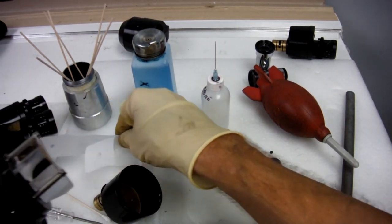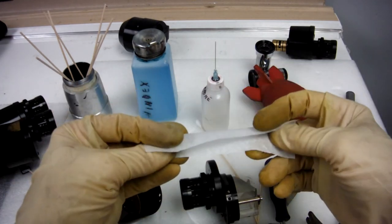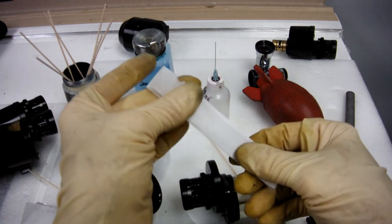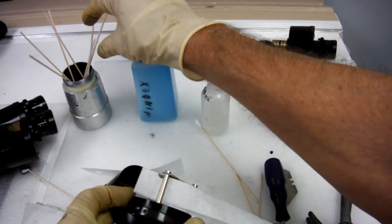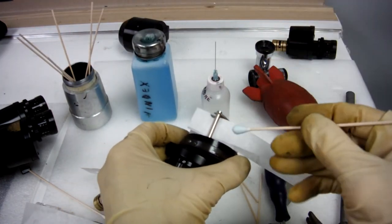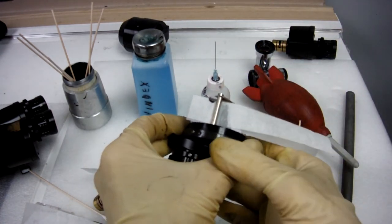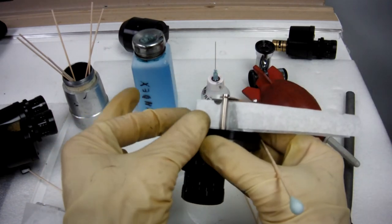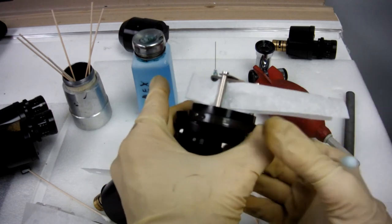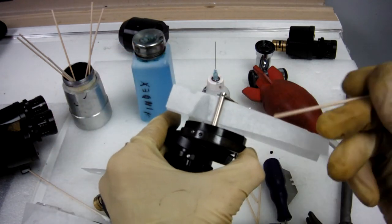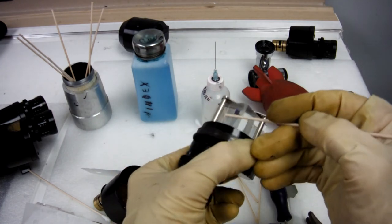One way you can clean underneath those, get a piece of chin rest paper, fold it in half, slide it under the bar, put a little Windex on the paper, and pull it through.